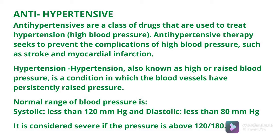जो normal range रहती है blood pressure की वो 80-120 mmHg होनी चाहिए — इसमें diastolic और systolic blood pressure आते हैं। Hypertension के case में जब आपका systolic और diastolic blood pressure दोनों increase हो जाते हैं — मतलब 80 से above और 120 से above — उस condition को hypertension बोलते हैं।